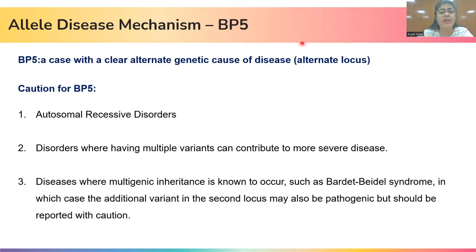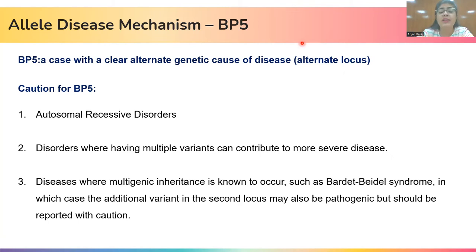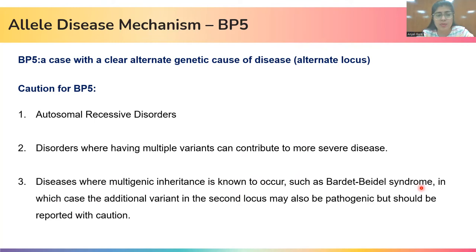The next attribute is BP5. It is similar to the previous attribute in the sense that it is supporting evidence of a benign impact to a variant when a pathogenic variant at a different locus is present that is explaining the disease. If a disease is already explained by a pathogenic variant in a different gene, then we assign BP5 to our variant of interest. But one has to be cautious in cases of autosomal recessive disorders where more than one pathogenic variant is possible, and in disorders where multiple variants can contribute to more severe disease, or where multigenic inheritance is known to occur — such as Bardet-Biedl syndrome — in which case the additional variant at the second locus may also be pathogenic.